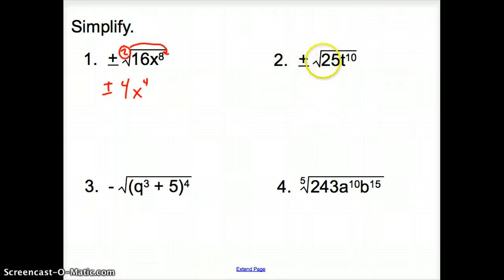Jumping to 2. The square root of 25t to the 10th. Again, there's an implied 2 here. Plus negative, since that's in front, we bring that down. The square root of 25 is 5. This 2 has to divide into that 10. So it's going to be t, and 10 divided by 2 is 5. So it's positive negative 5t to the 5th.